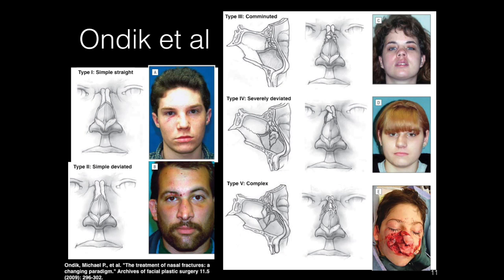Another classification system is based on treatment type. The Ondex Group proposed this system after retrospectively analyzing 86 cases. The first three types — simple straight, simple deviated, and comminuted — were reduced with closed manipulation if the fracture was mobile. If immobile, impacted, or closed manipulation failed, the fractures are repaired in an open operation. The last two types — severely deviated and complex — were treated acutely to repair the nasal septum, and then patients were brought back for a formal septorhinoplasty for any residual deformity or septal deviation.